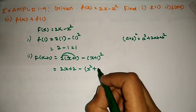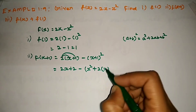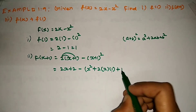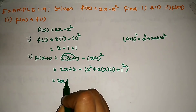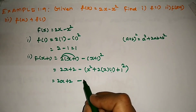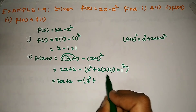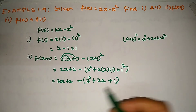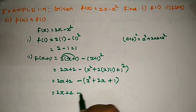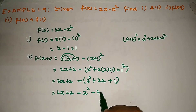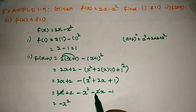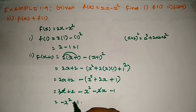Applying the formula: 2x plus 2, minus x squared plus 2 times x times 1 plus 1 squared. That gives us 2x plus 2 minus x squared minus 2x minus 1. The 2x terms cancel, and we get minus x squared plus 1. That's the answer for f of x plus 1.